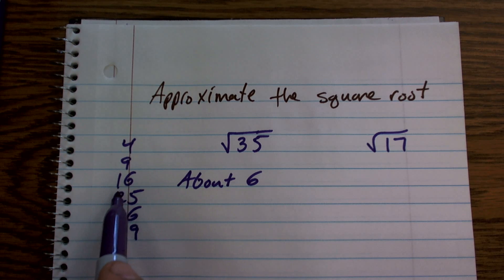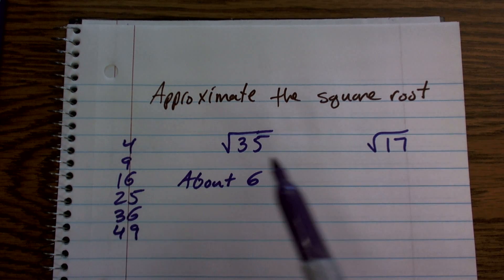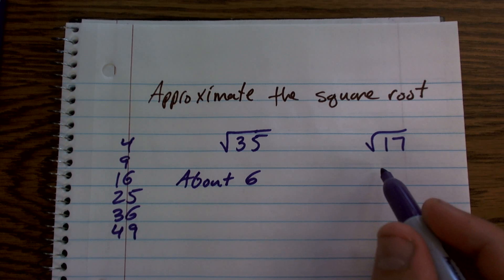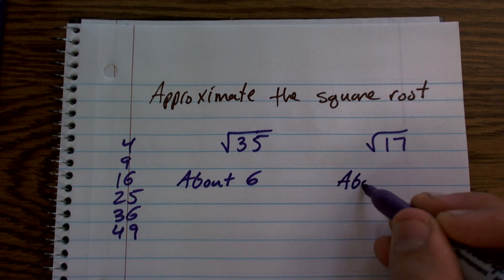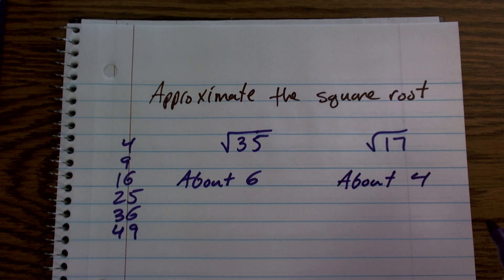Since it's between 4 and 5, which would be the square root of 25, but it's very close to 4, I'll just say about 4. Meaning it's an approximation close to 4.